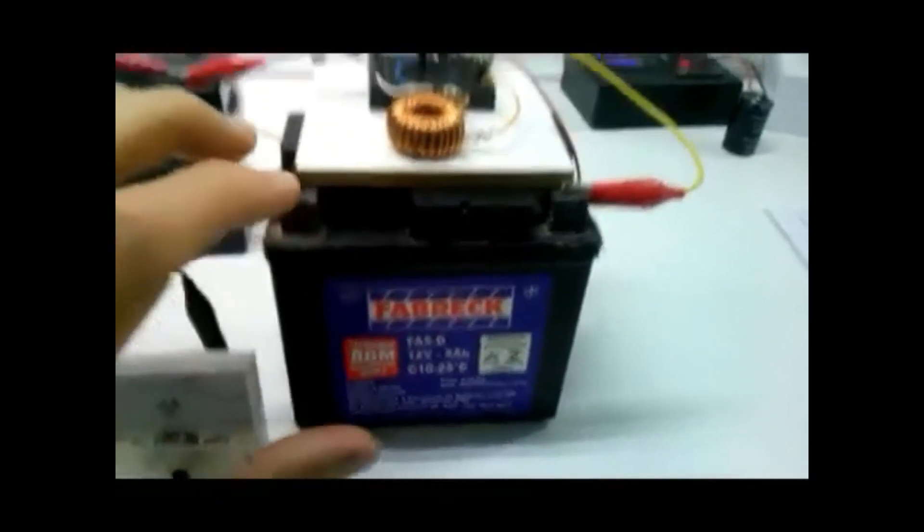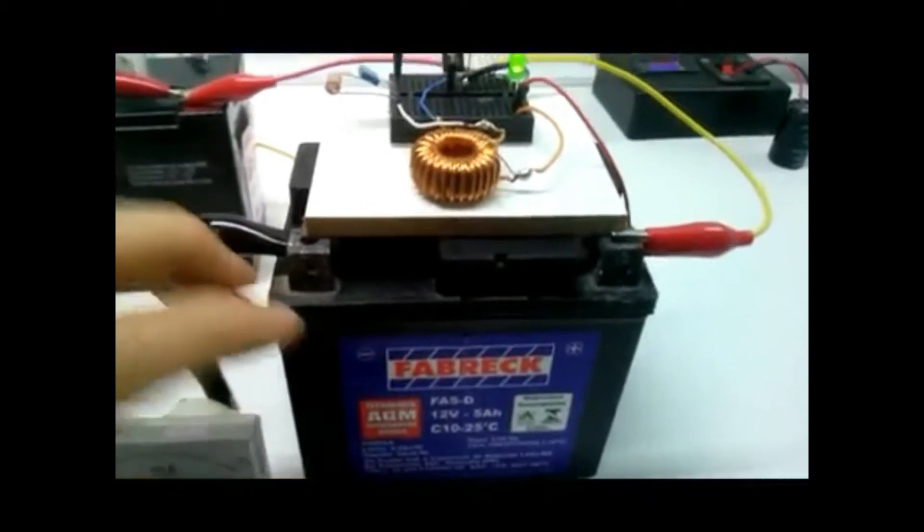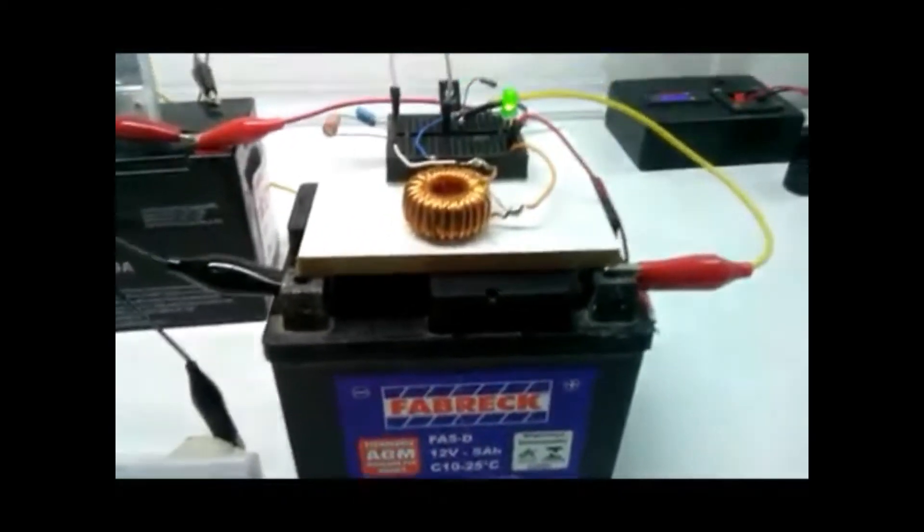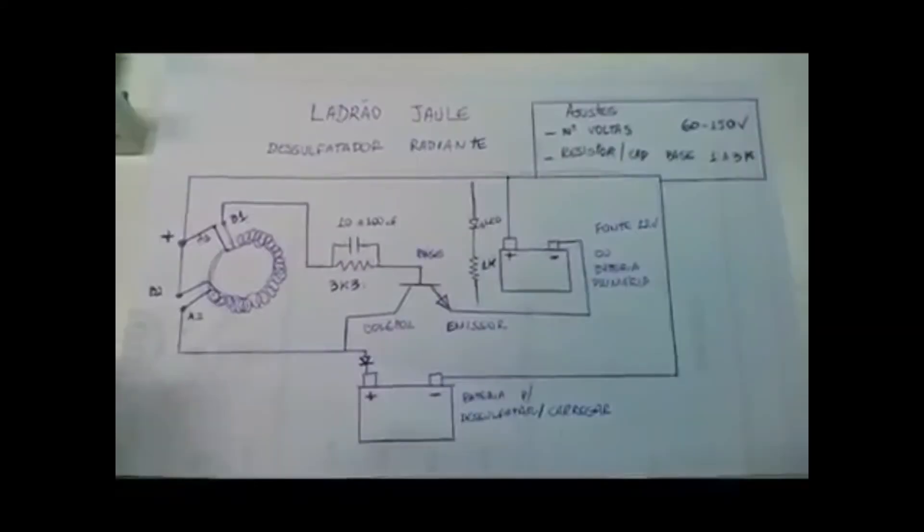So you can assemble the circuit and put your battery to desulfate without worrying about supervision of the process for one or two weeks. This is the schematic.